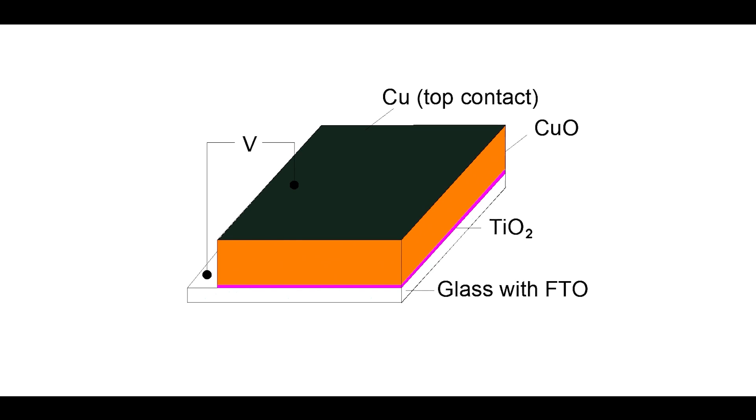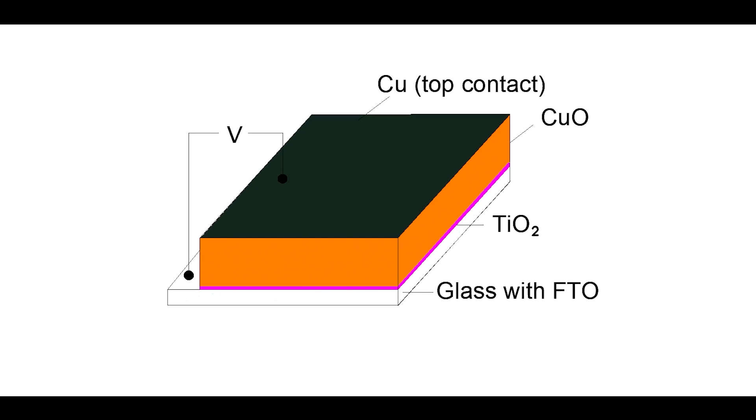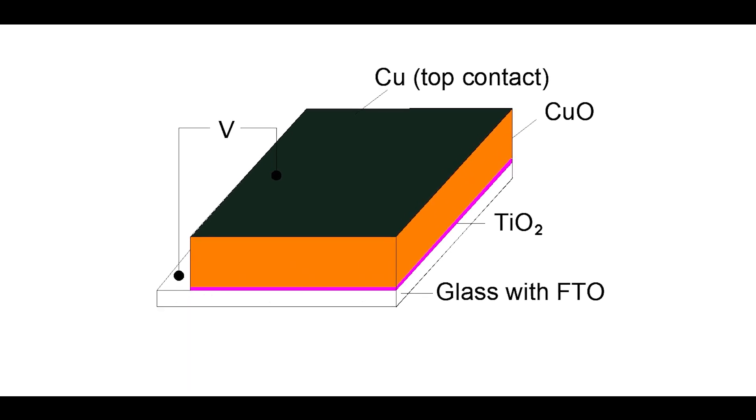Our findings indicated that a cupric oxide layer is more favorable. Thus, we evaluated various approaches to enhance the efficiency of titanium dioxide, cupric oxide solar cell.